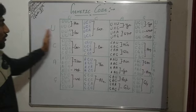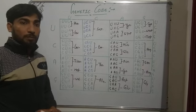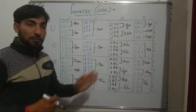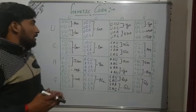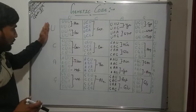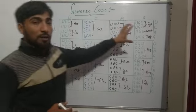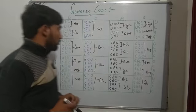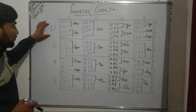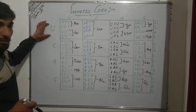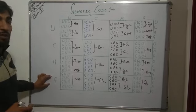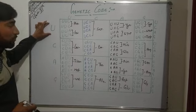Now we will discuss about this table of genetic code and how this table is made. First of all, we have to draw 4 columns and 4 rows, and then in the first line we have to write U, C, A, G — one for each column.